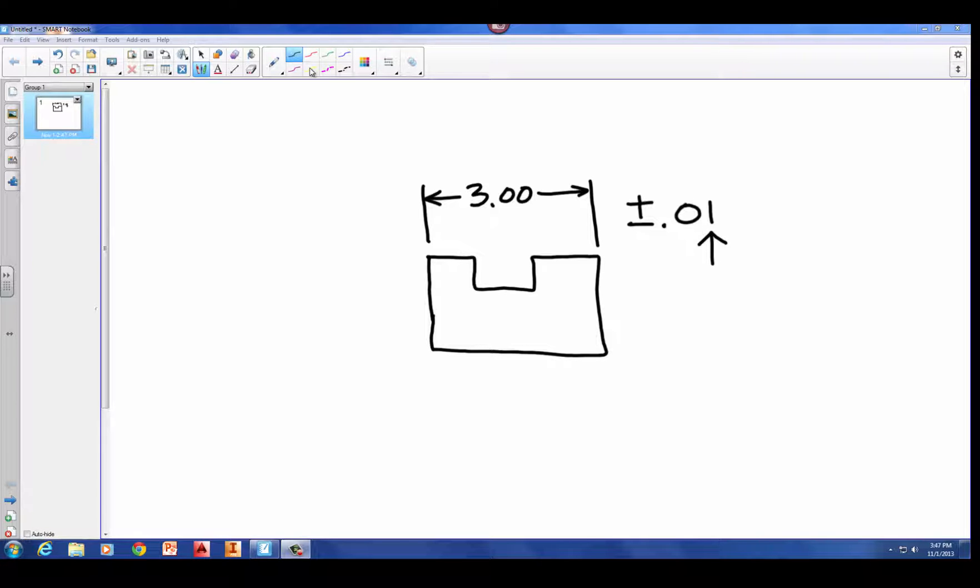And what that means is that we can add a hundredth of an inch to 3.00 or we can subtract a hundredth of an inch. So if we add a hundredth of an inch, the width of our part at its widest could be 3.01. And if we subtract a hundredth of an inch, the width of the part at its narrowest could be 2.99.